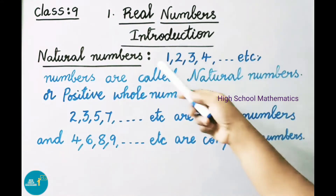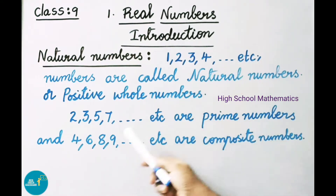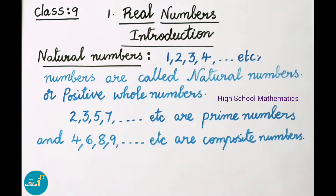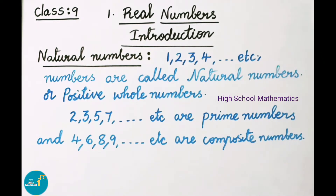Among all the natural numbers, if you consider 2, 3, 5, 7, 11, 13, 17, 19, etc., all these numbers are called as prime numbers. The numbers which are having 1 and itself as a factor are called as prime numbers.